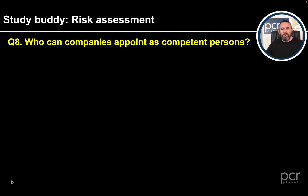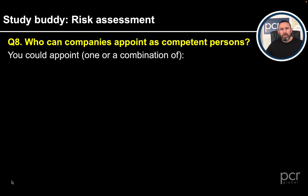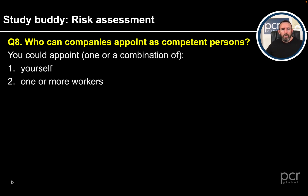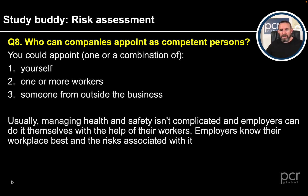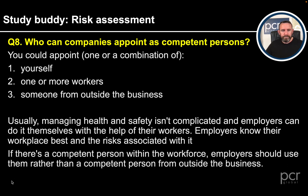Question 8: Who can companies appoint as competent persons? You could appoint one or a combination of yourself, one or more workers, or someone from outside the business. Usually, managing health and safety isn't complicated and employers can do it themselves with the help of their workers. Employers know their workplace best and the risks associated with it. If there is a competent person within the workforce, employers should use them rather than a competent person from outside the business.